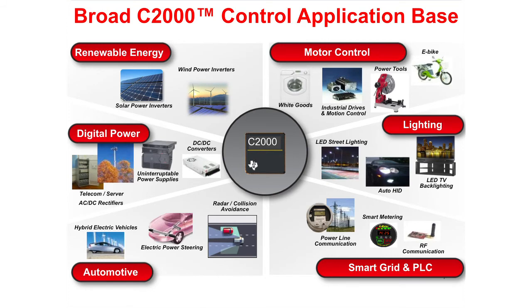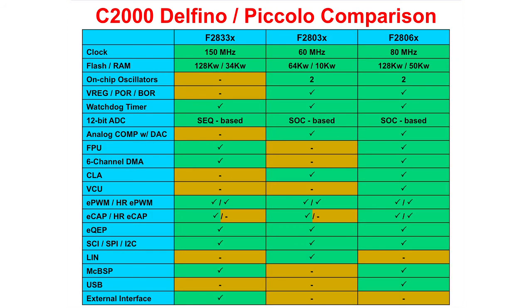The C2000 product family has a very broad application base with target markets in motor control, lighting, smart grid and power line communications, automotive, digital power, and renewable energy. When comparing the Delfino and Piccolo product lines, you will notice that the Piccolo F2806X devices share many features with the Delfino product line. The Delfino product line is shown in the table by the F2833X column. Therefore, the F2806X, being the most feature-rich Piccolo device, was chosen as the platform for this workshop. The knowledge learned from this device will be applicable to all C2000 product lines.